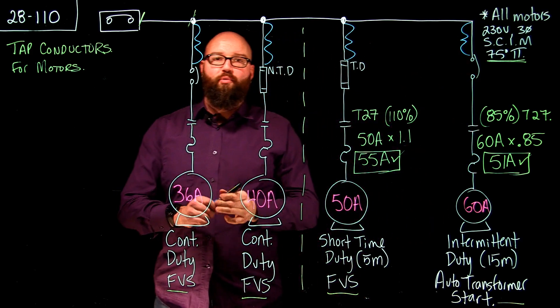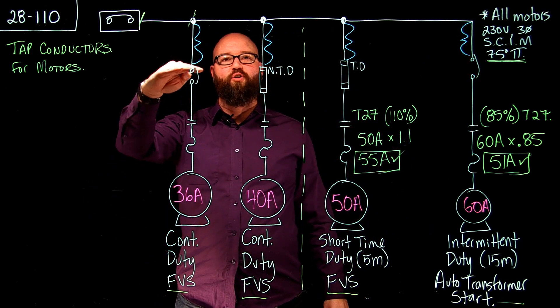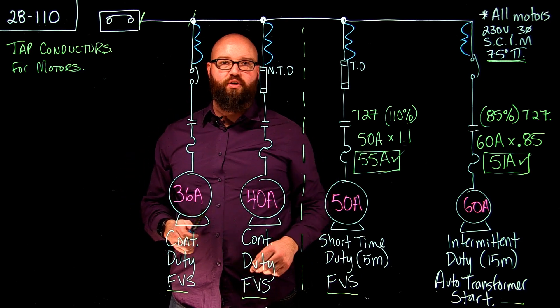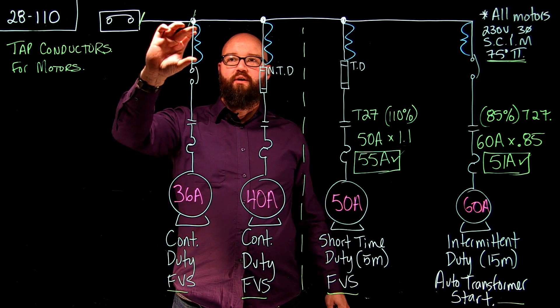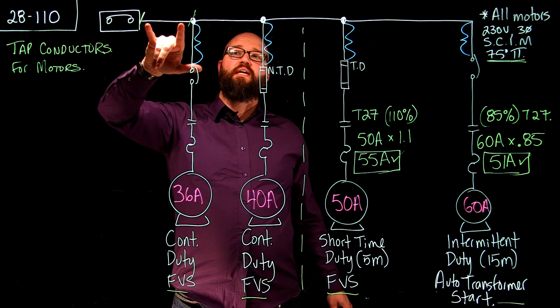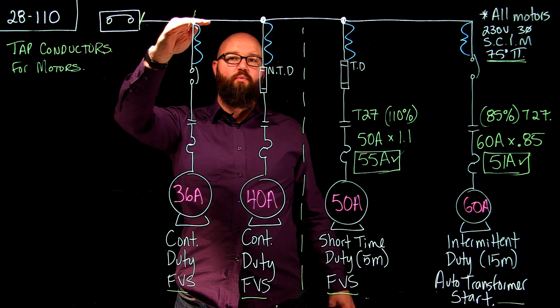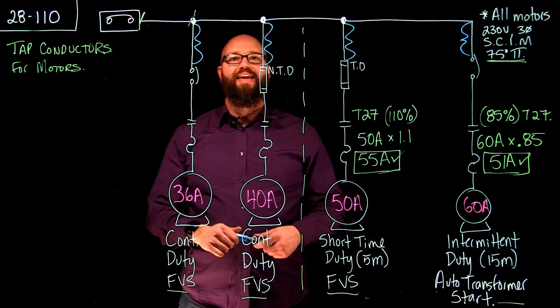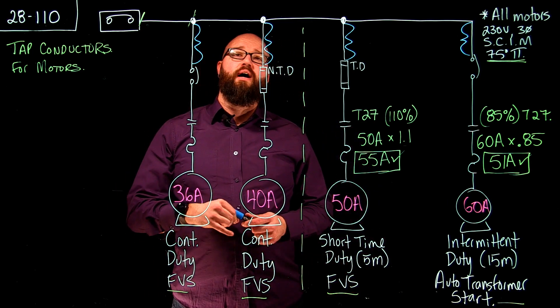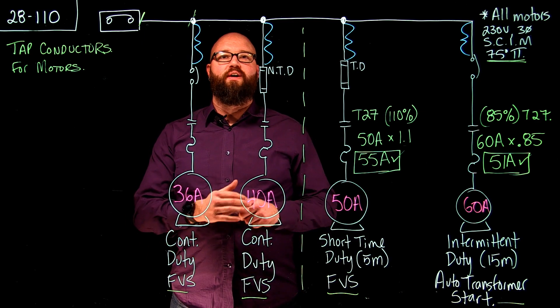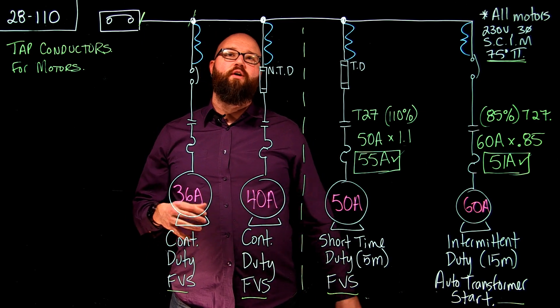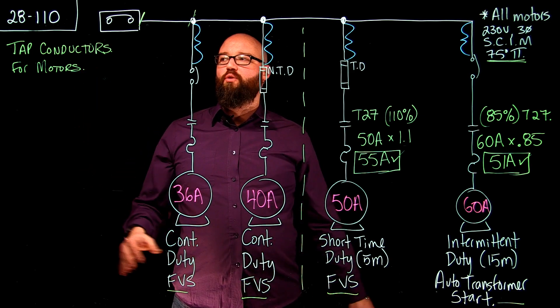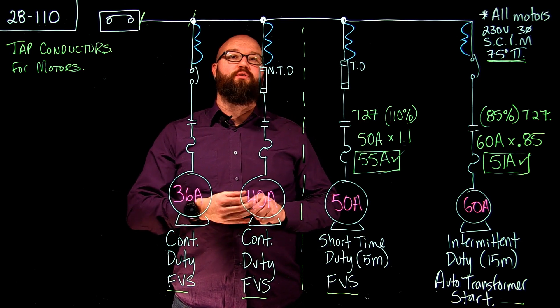Because the branch circuit is defined as the portion in between the final overcurrent device and the point of utilization. So for example all of this down in here would be our branch circuit conductor. Up here this would be my tap conductor from this individual motor bank feeder conductor. We want to downsize that without having to put an overcurrent device in there. 14100 tells me that I cannot downsize a conductor without putting an overcurrent device unless I meet very specific rules or exceptions. And in this case we're not using 14100 specifically, we're using 28110 which is our rule that tells us how to deal with tap conductors for motor circuits.